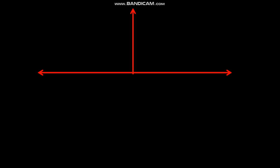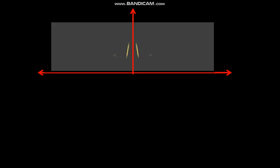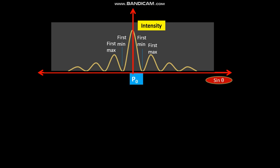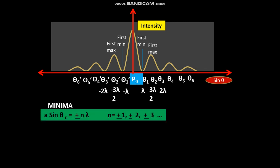Now let us see the waveform for a diffraction pattern. This is the intensity versus sine theta graph. This is the first minimum on both the sides and the first maximum on either side. Now these are the theta_1s and theta_2s. Minima is A sine theta_n is equal to plus minus n, where n is equal to plus minus 1, plus minus 2, plus minus 3 and so on.